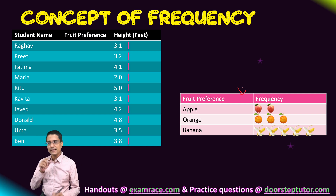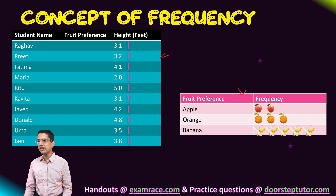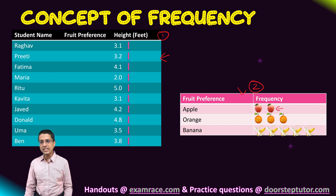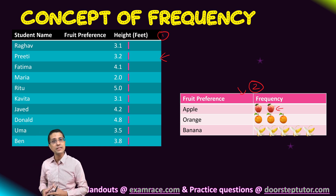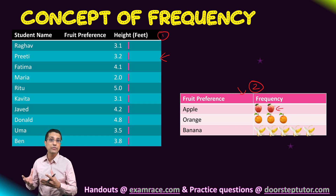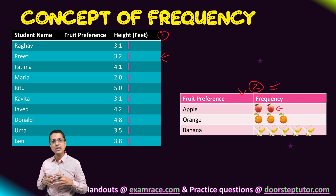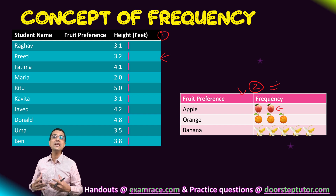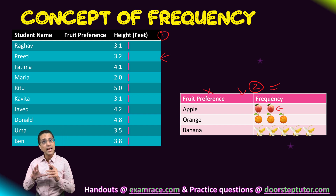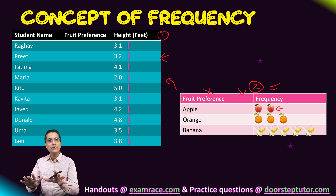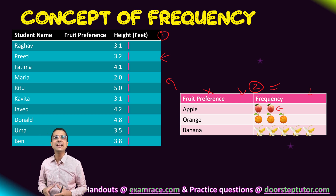There is a slight difference between the kind of data available in the first student table and the second frequency table. From the frequency table we can answer questions such as which is the most preferred fruit or the least preferred fruit. However, if we want to find out who likes apple or who likes banana, that information is missing — we would have to go back to the original table. So we gain frequency counts but lose individual-level information.